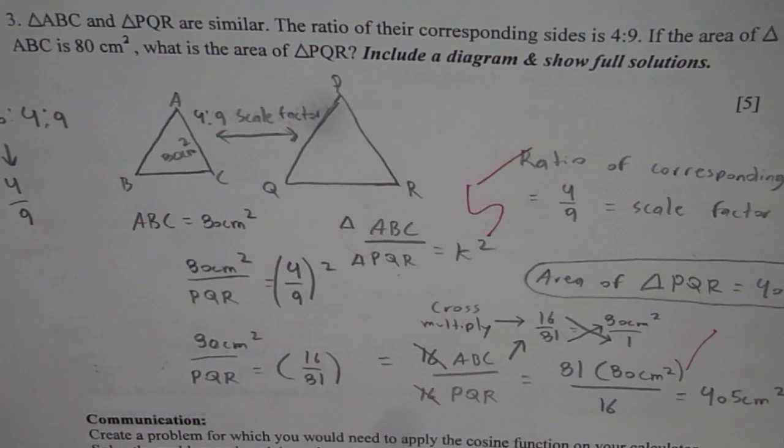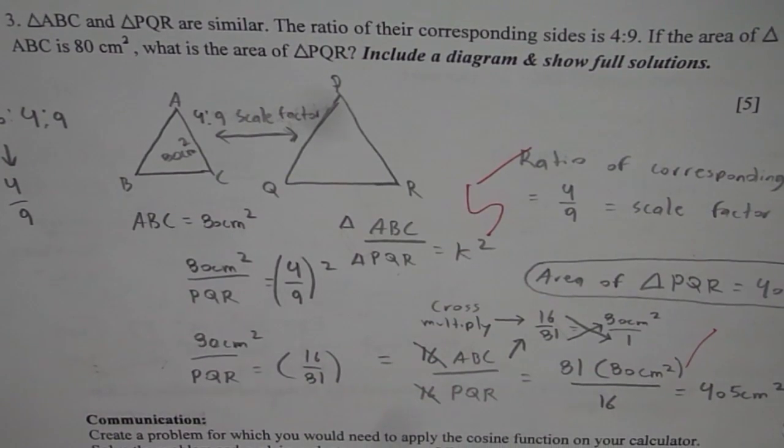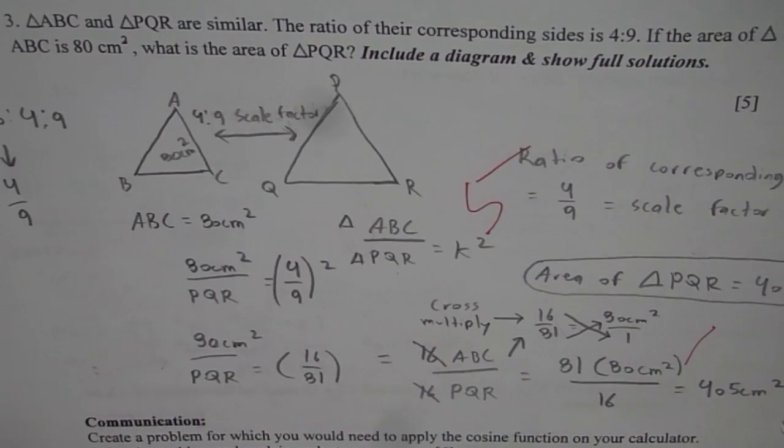Well in a similar triangle it has to be square of the ratio, right? Square of the ratio of the sides. So that is what you have to use. Sides are proportional but the area is squared.